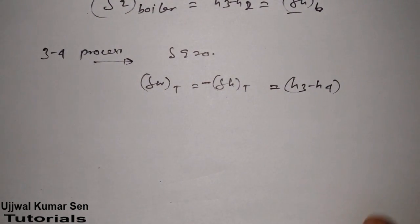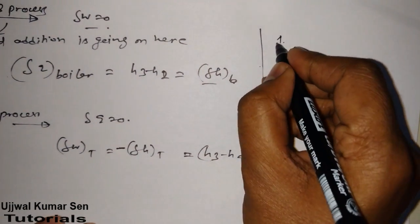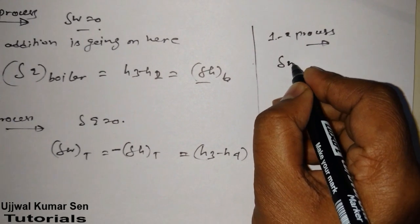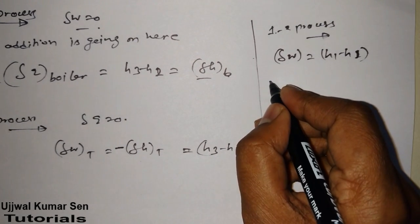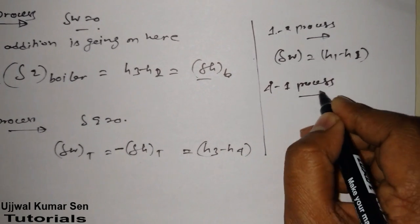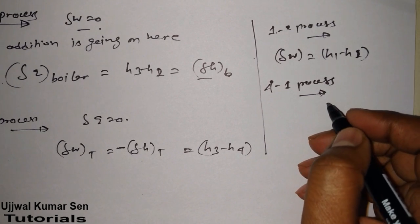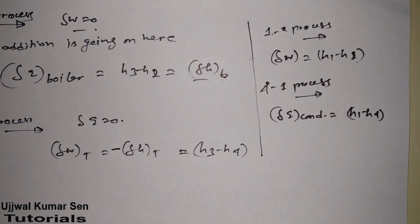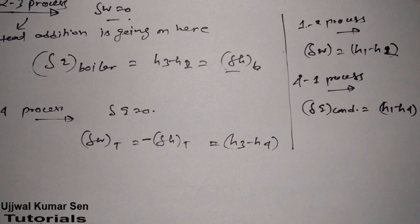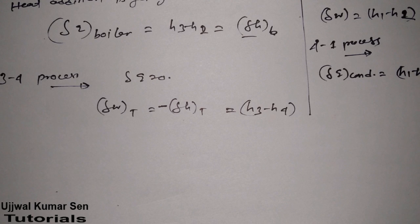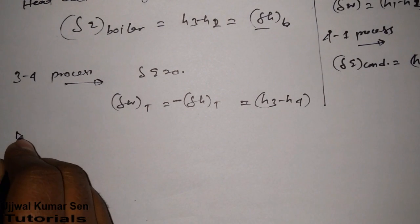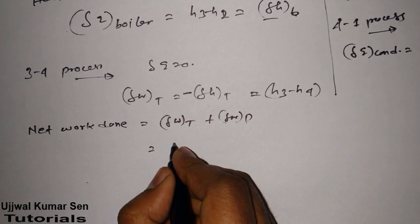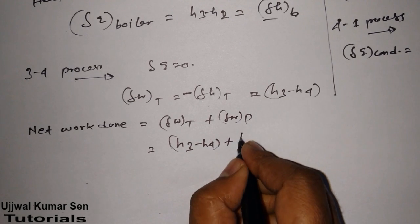For the 1-to-2 process in the pump: the work is H1 minus H2. For the 4-to-1 process in the condenser: delta Q_condenser = H1 minus H4. So net work done equals work done at the turbine plus work done at the pump: (H3 minus H4) + (H1 minus H2), which can also be written as (H3 minus H4) minus (H2 minus H1).